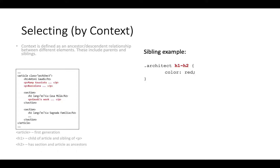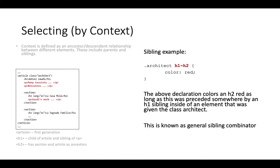There's another way to show siblings using the tilde sign instead of plus. The tilde is a more relaxed condition compared to plus. In this example, the formatting is applied to H2, and so long as there is an H1 before the H2, it will become red. The H1 does not have to be immediately before — it just needs to exist before the H2.